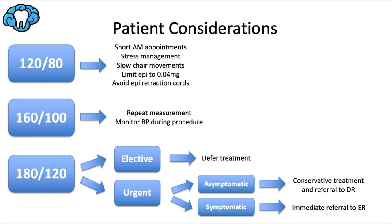When the patient reaches the 160/100 threshold — the middle of Stage 2 hypertension — follow all prior guidelines with two additions: retake the measurement after five minutes, possibly in the other arm, to see if it lowers with relaxation. Some recommendations say to defer treatment at this stage, but per AHA guidelines, at this level we want to monitor blood pressure throughout the procedure — namely an extraction or surgical procedure — about every 10 to 15 minutes, to ensure it doesn't climb to the hypertensive crisis threshold.